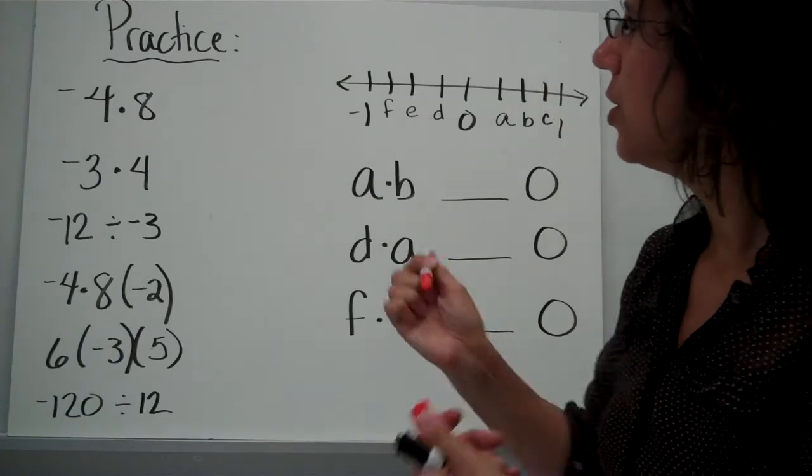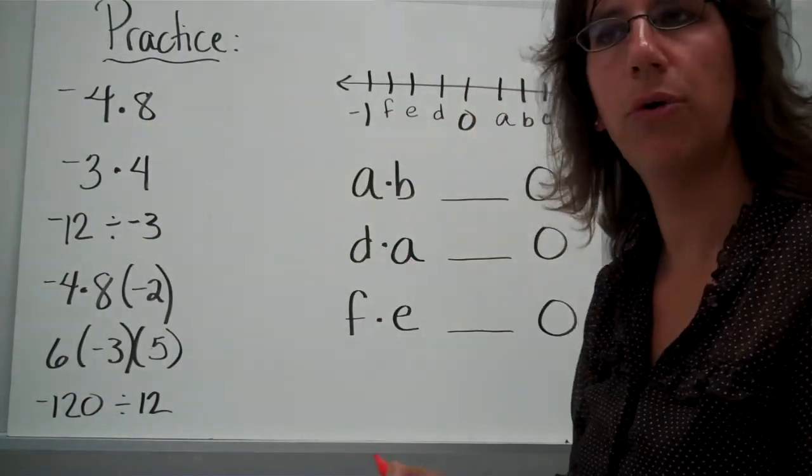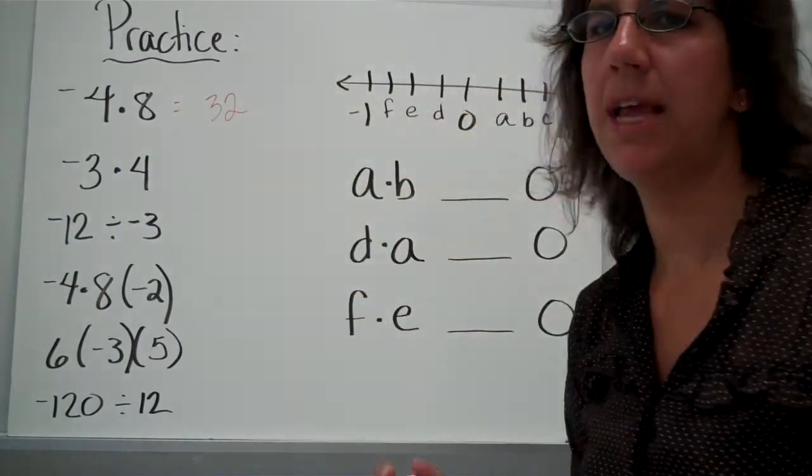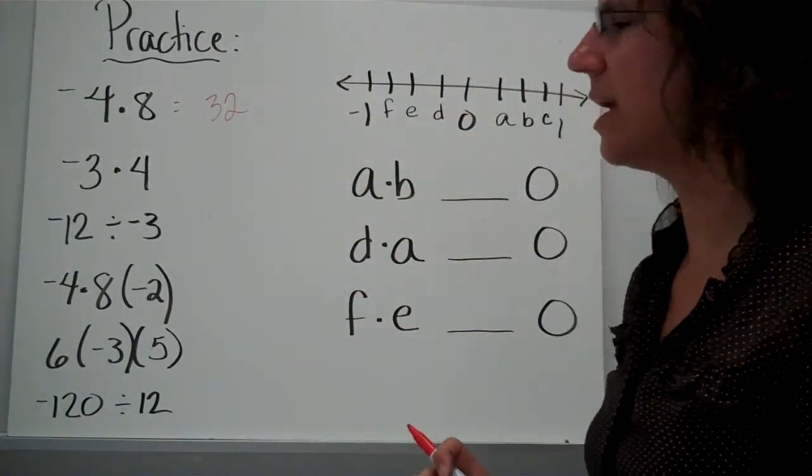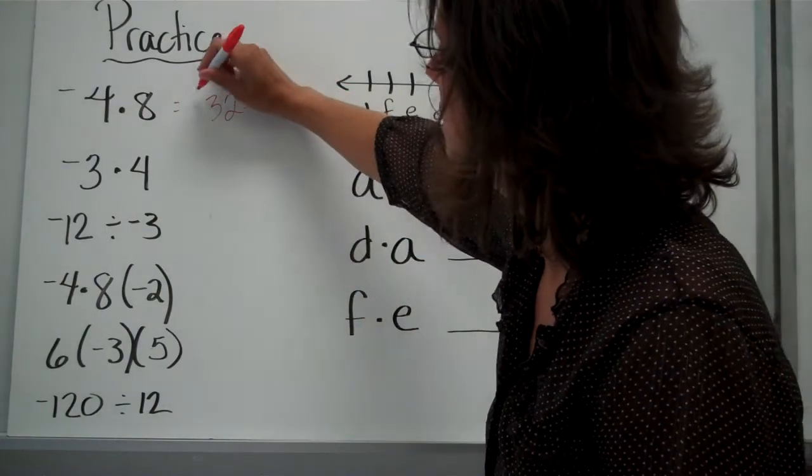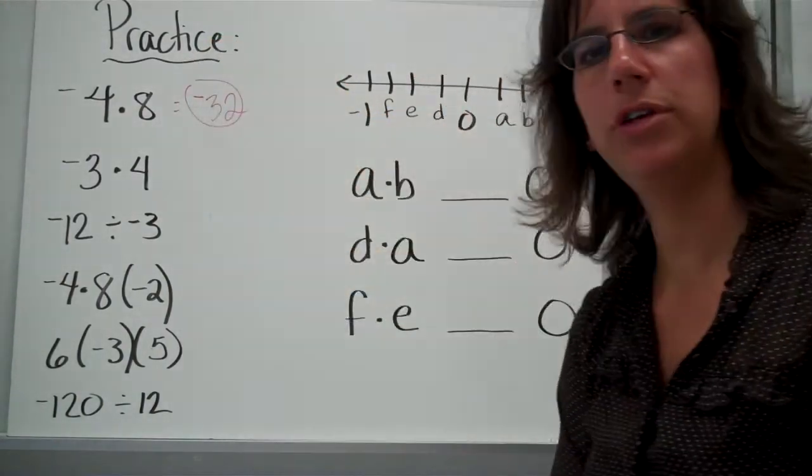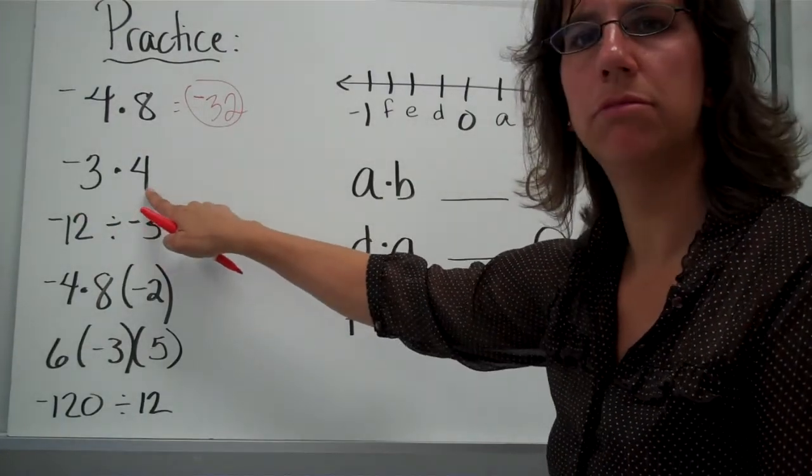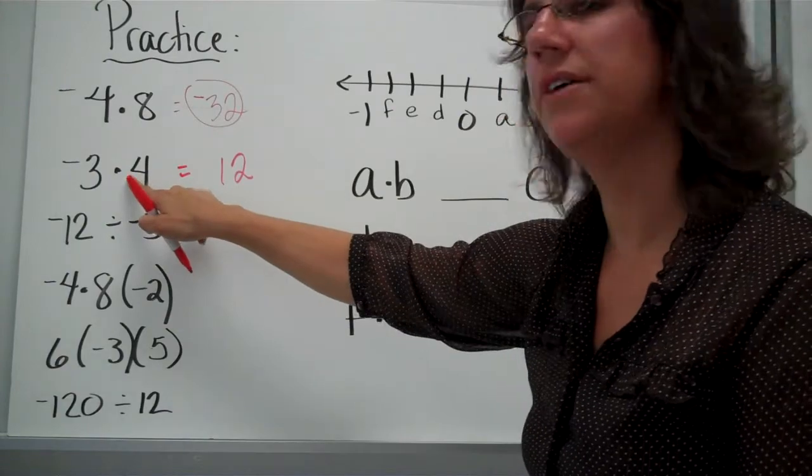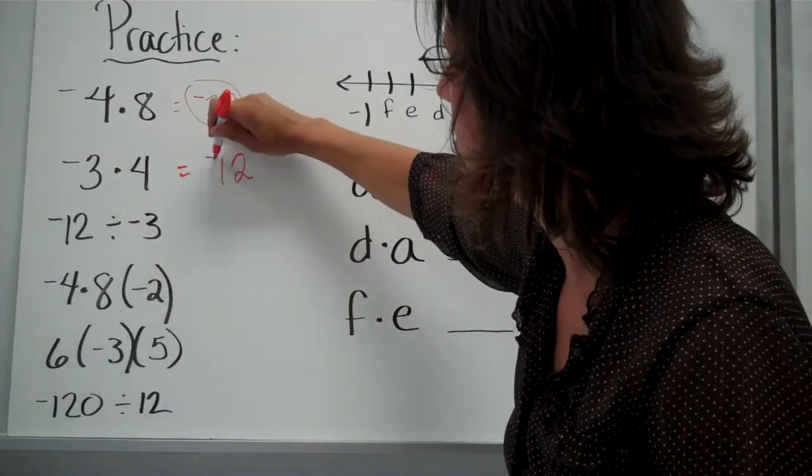Alright, let's see how you did. Here you have negative 4 times 8. Well, 4 times 8 is 32. You deal with the numbers the same you always would. Now, take that answer and now let's look at the signs. The signs are different, so our answer is negative. So you've got negative 32. Alright, look at this one. Negative 3 times 4. Well, 3 times 4 is 12. Signs are different, so our answer is negative.